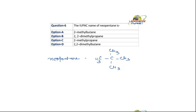So what will be its name? Counting the carbons: 1, 2, 3. So it is 2,2-dimethyl. What would it be? Propane.